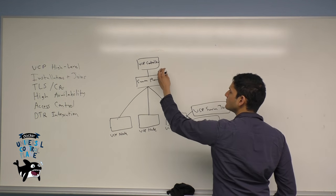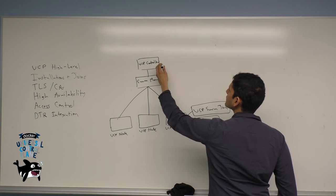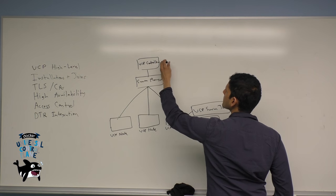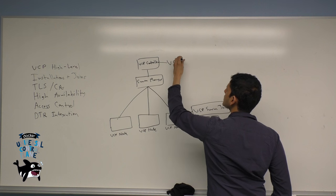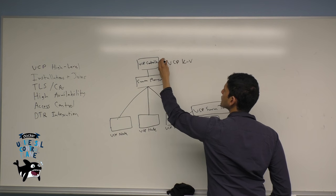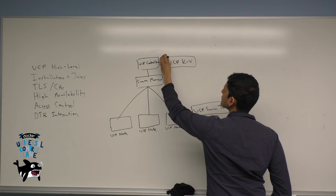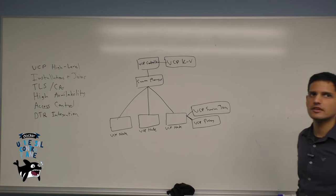As a part of the UCP controller, we have several containers that add additional enterprise-grade functionality to the cluster. The first is the UCP key-value store. This is a distributed key-value store. In this case, currently in UCP 1.0, we use etcd.